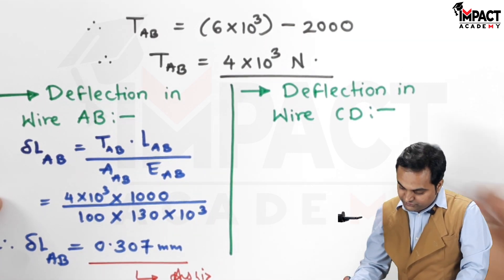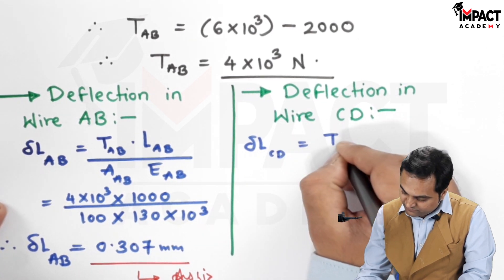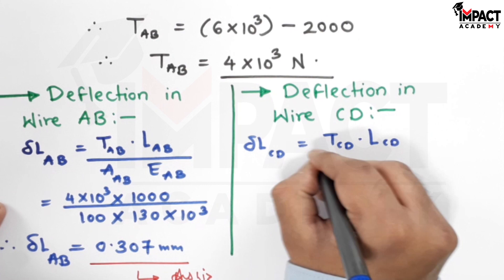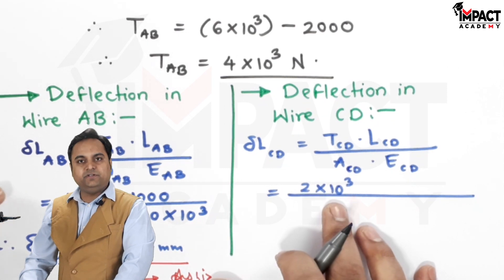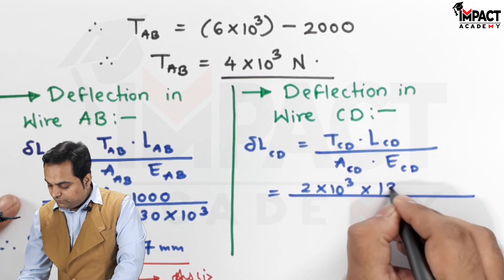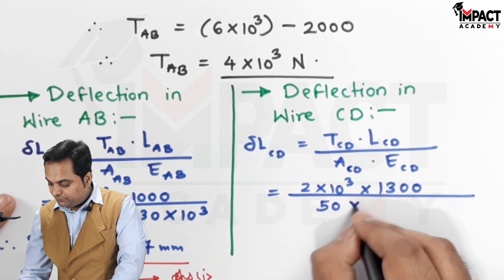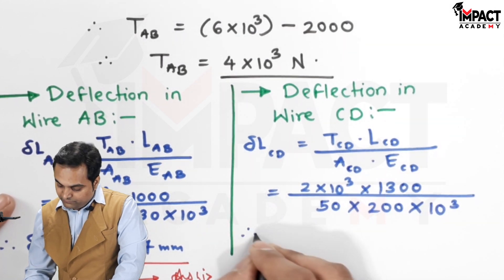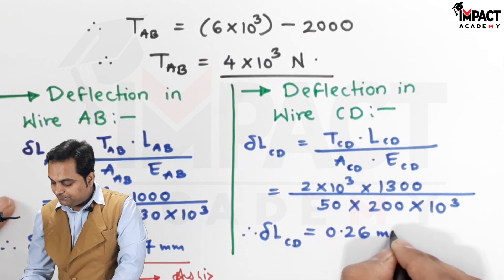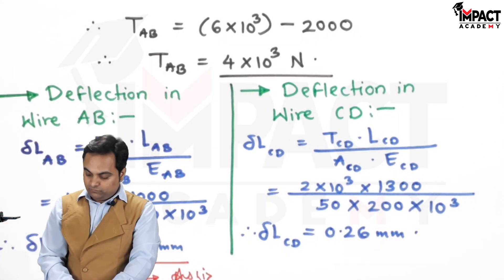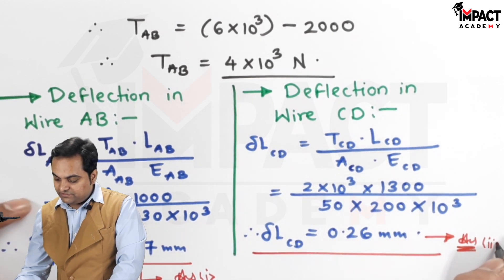Similarly, I would be calculating for CD. Deflection in CD, the force is T suffix CD which is a tension. T CD is 2000 that is 2 into 10 raise to 3, length we had calculated 1300, area is 50, Young's modulus 200 into 10 raise to 3. So from this the deflection in string CD, it comes out to be 0.26 mm. So these are two unequal deflections in both the wires, that is the second answer.